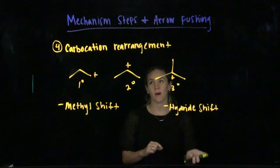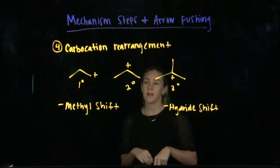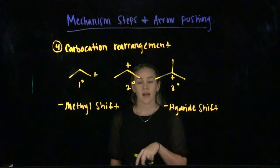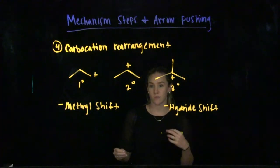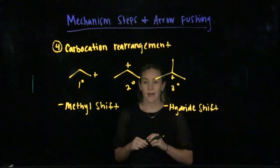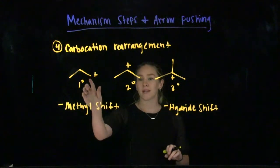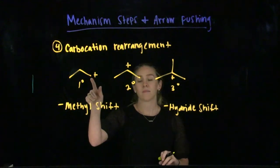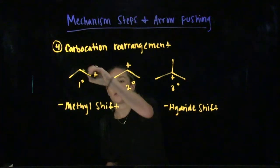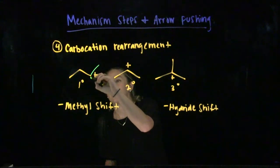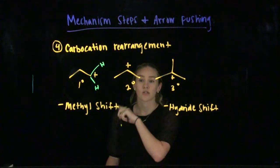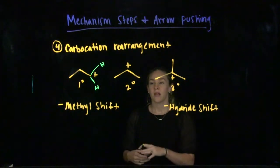The last mechanism step is called a carbocation rearrangement, which is an umbrella term for a methyl shift and a hydride shift — very similar but with a specific difference. A carbocation is a carbon atom that has a positive charge, meaning it has only three bonds rather than four. The carbon lacks that fourth bond, giving it that positive charge.